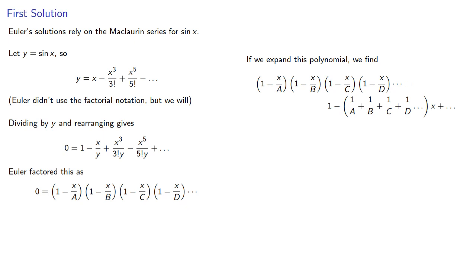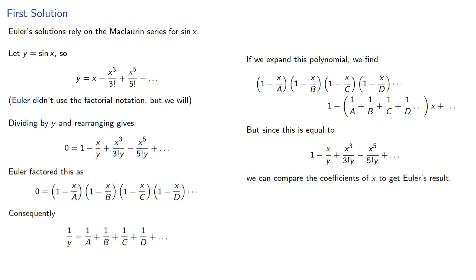Now, if we expand this polynomial, we get... But since this is supposed to be equal to our power series, we can compare the coefficients of x to get Euler's result that 1 over y is the sum of the reciprocals of a, b, c, and d, and so on, and a, b, c, and d satisfy the equation sine x equals y.